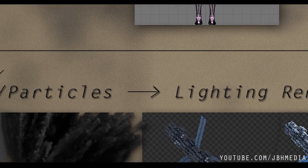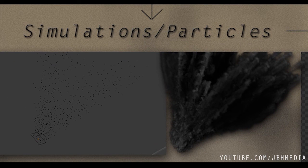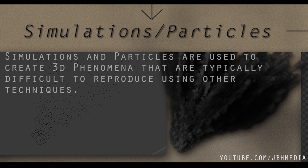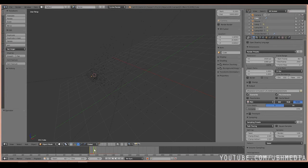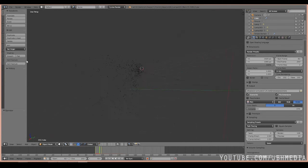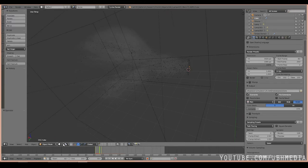Before lighting and rendering is done, any kind of particle system or simulations needed for an effect need to be set up and baked. Simulations and particles are used to create 3D things that are hard to reproduce using other techniques. These include things like explosions, smoke, destruction, and so on.